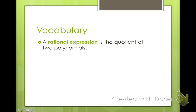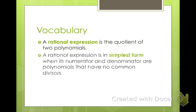So vocabulary: a rational expression is the quotient of two polynomials. A rational expression in its simplest form is when the numerator and denominator are polynomials that have no common divisors. So we're going to factor as much as possible, get rid of everything that we can, and see what we've got left.